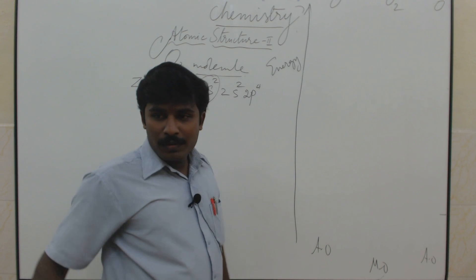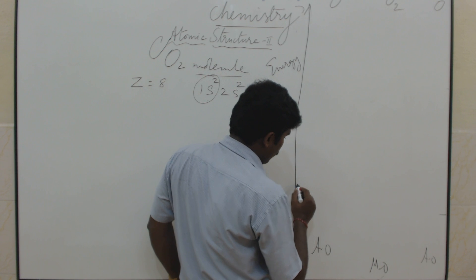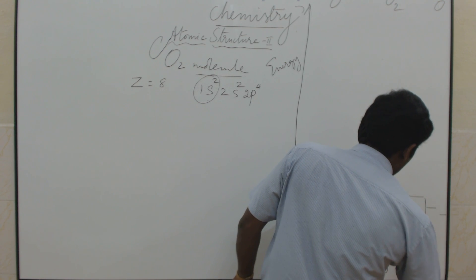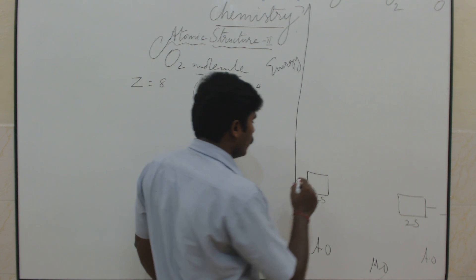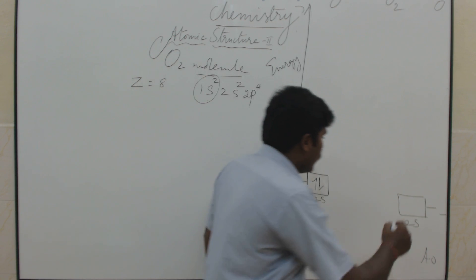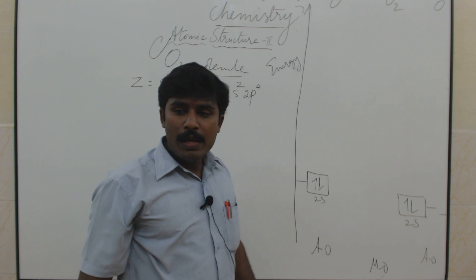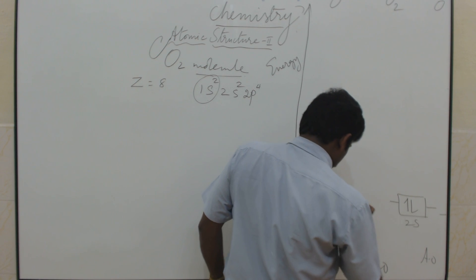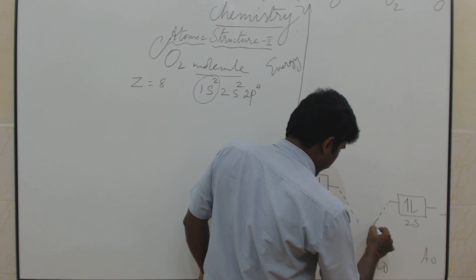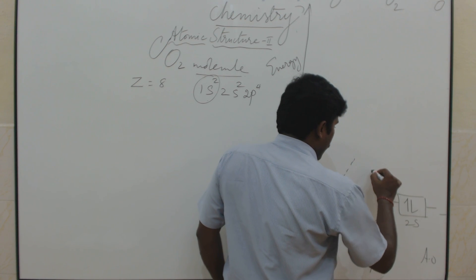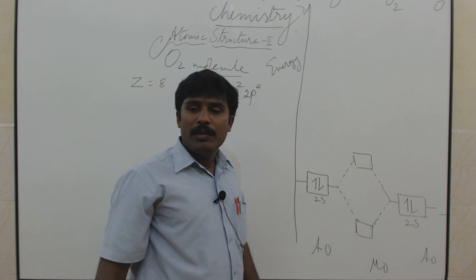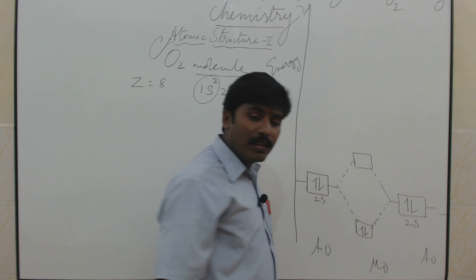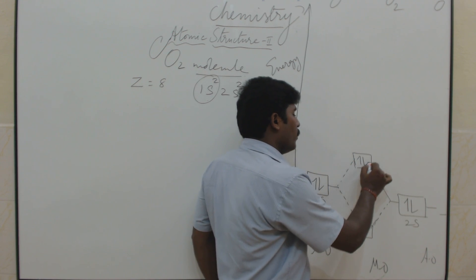For the 2s orbital, this oxygen atom has a 2s orbital and the other oxygen also has a 2s orbital, each with 2 electrons. These two atomic orbitals combine to form molecular orbitals: one gets lower energy, named the bonding molecular orbital, and another gets higher energy, named the anti-bonding molecular orbital. Totally we have 4 electrons, so the first 2 fill the bonding level and the other 2 fill the anti-bonding molecular orbital.